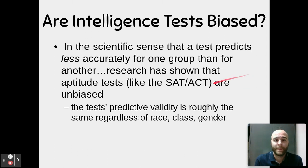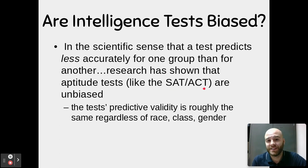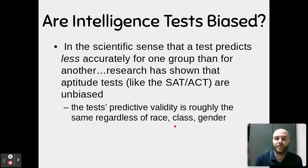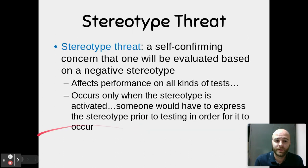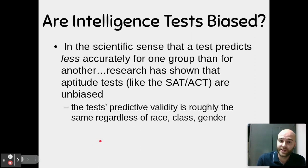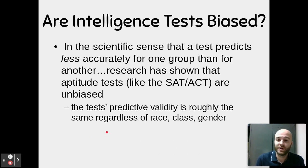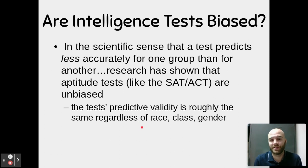In the scientific sense — meaning whether a test predicts less accurately for one group than another — research has shown that aptitude tests like the SAT and ACT are actually unbiased, because their predictive validity is roughly the same regardless of race, class, or gender. GPA has been found to be the best single predictor of college success, better than SAT or ACT alone. However, the combination of GPA with SAT and ACT scores yields the highest predictive validity, so these tests remain useful.